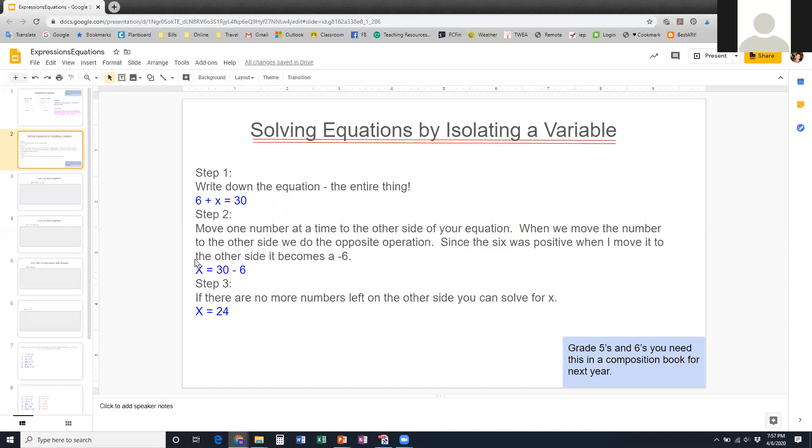Step two, move one number at a time to the other side. So here we've got 6 + x = 30. We want to move that six to the other side. When we move that six to the other side, it becomes a negative because it was positive before. It had no negative sign in front of it. So because we're moving it, now it's negative.